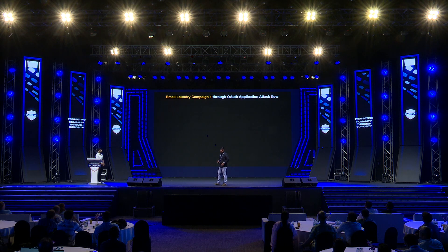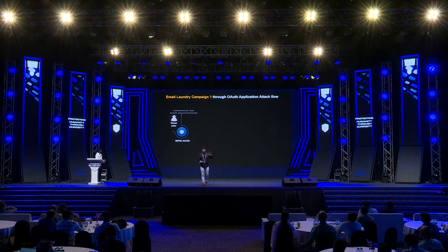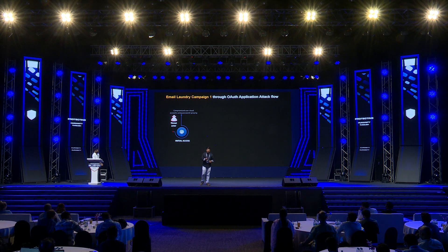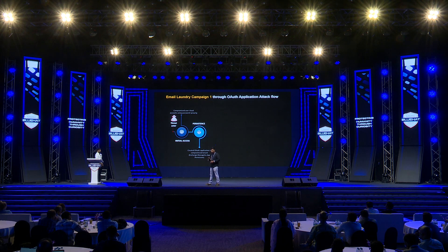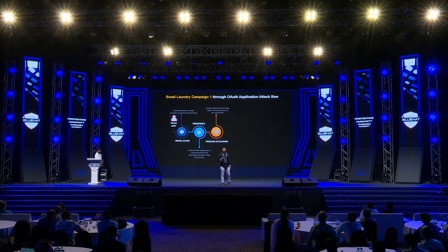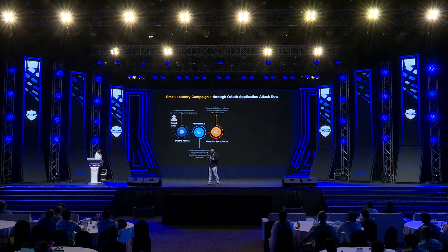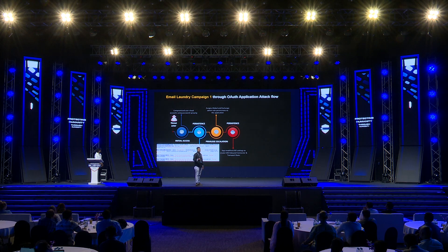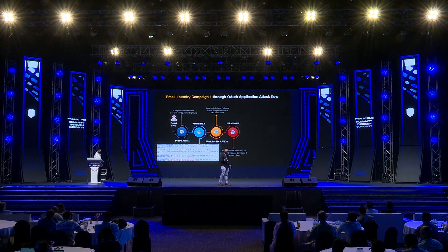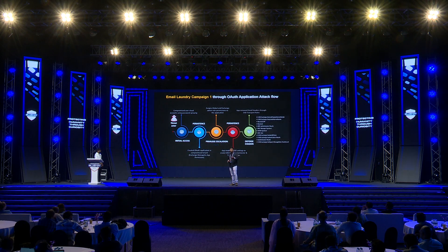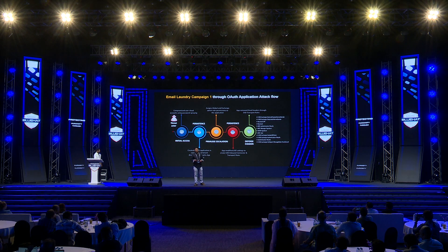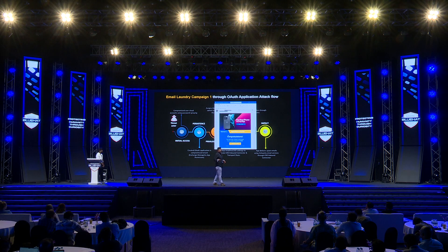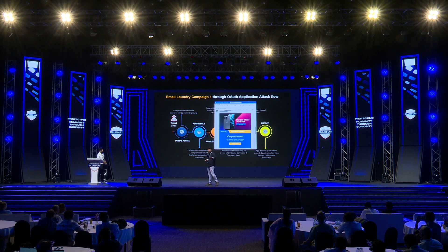The Email Laundry Campaign: unlike consent phishing where the initial access was via email, here initial access was achieved by compromising a user through password spraying. For persistence, the attacker used a compromised tenant to create an app with Exchange Manager app permissions, giving global and Exchange admin role privileges. The attacker then used PowerShell to modify Exchange settings, creating an inbound connector and a transport rule. The transport rule was used for defense evasion — to modify email headers. The main motive was to send spam emails through a third-party phishing service.